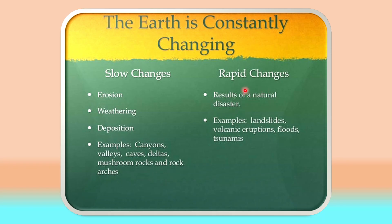However, rapid changes occur as a result of natural disasters. They include landslides, volcanic eruptions, floods, and tsunamis. We can see how these bring about a lot of change on the surface of the earth very quickly.